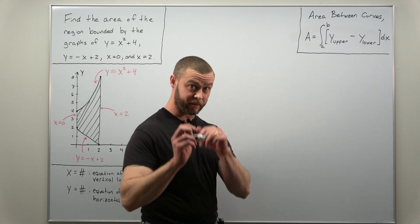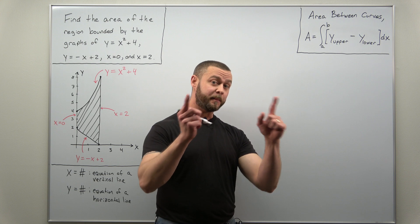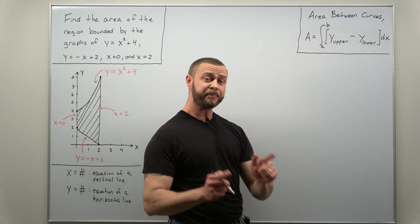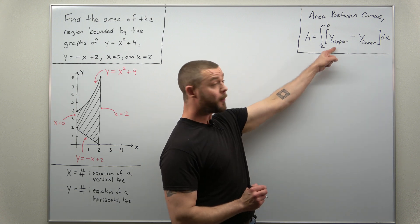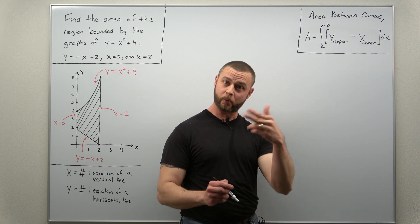Now the formula that you want to keep in mind is really simple. We define the area of a region bounded between two curves as the integral from a to b, and we integrate the upper function or upper curve minus the lower function or lower curve.